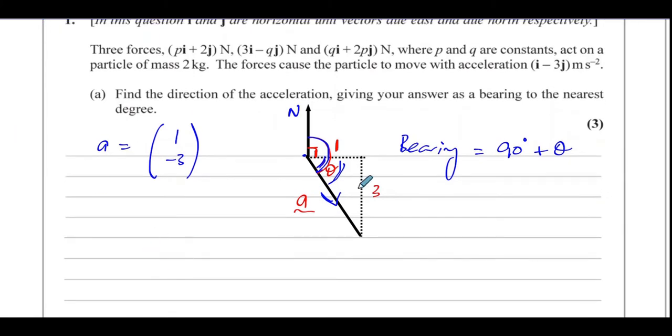We know that in this right angle triangle, because this is east and this is south, we know that the tangent of the angle theta is opposite over adjacent, which is 3 over 1. Therefore, we can say theta is equal to inverse tan of 3.